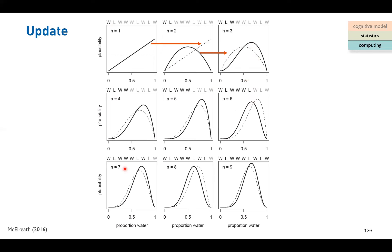After all nine experiments, the peak of the posterior is around two-thirds, consistent with observing six water out of nine. It's also interesting to compare the graphs at three, six, and nine experiments — all have a two-thirds ratio, but the width of the curve decreases as sample size increases. More data means less uncertainty: the variance is reduced and we have more confidence about where the peak lies.